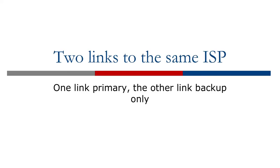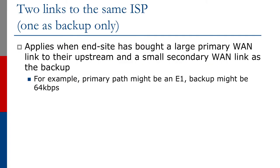The first example deals with the case where one link is the primary link and the other is the backup link, for two links to the same ISP. This applies when the end site has bought a large primary link and a small secondary backup link to the upstream provider. For example, the primary path might be an E1 at 2 megabits per second, and the backup might be 64 kilobits per second. Scale the bandwidths appropriately to your situation.